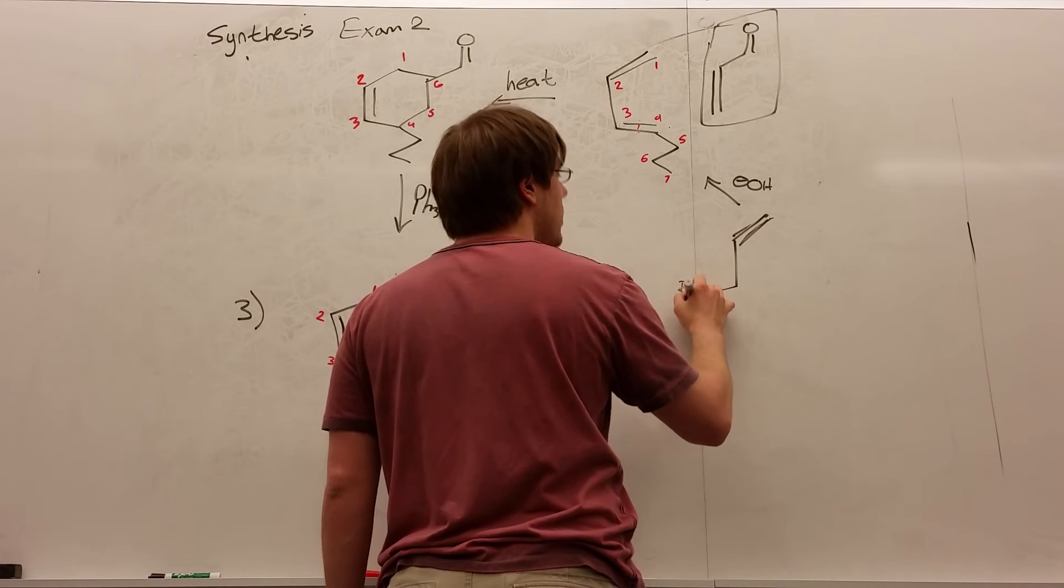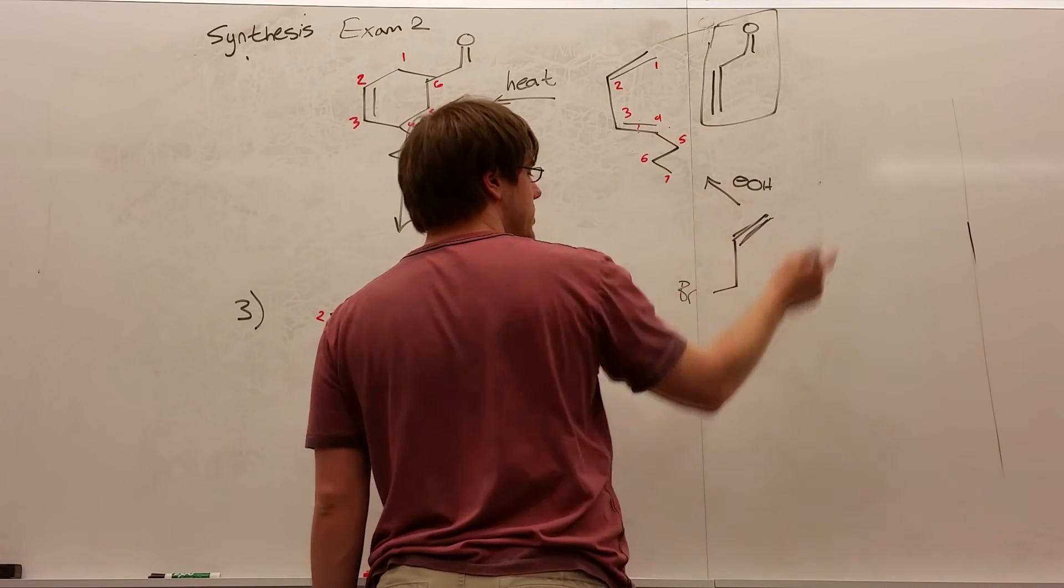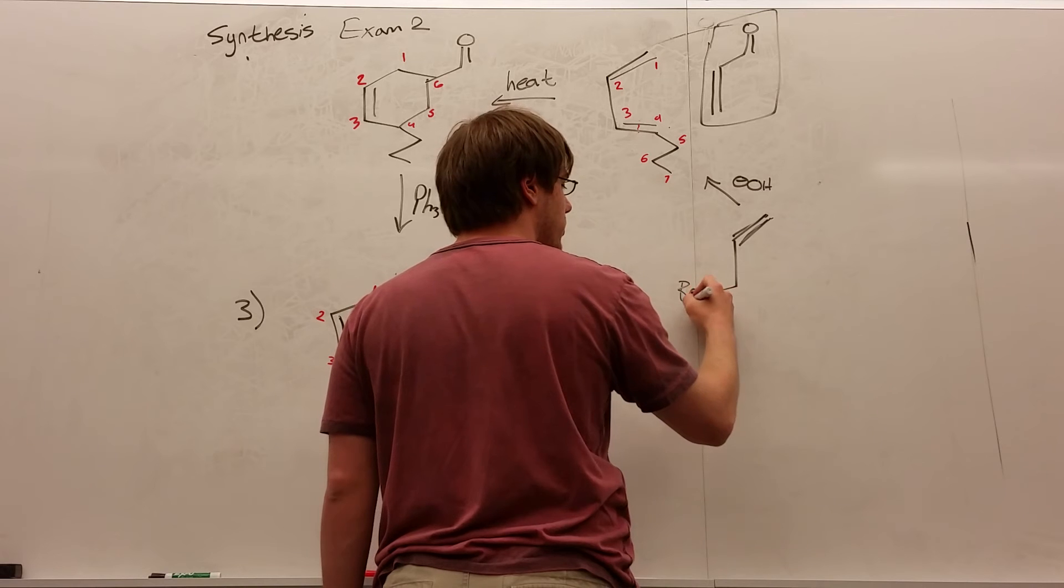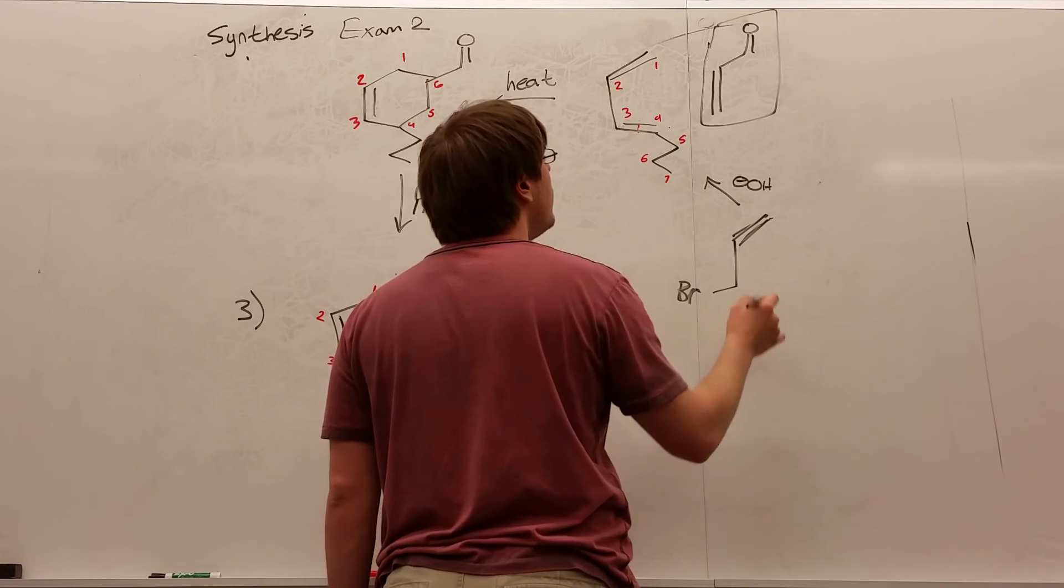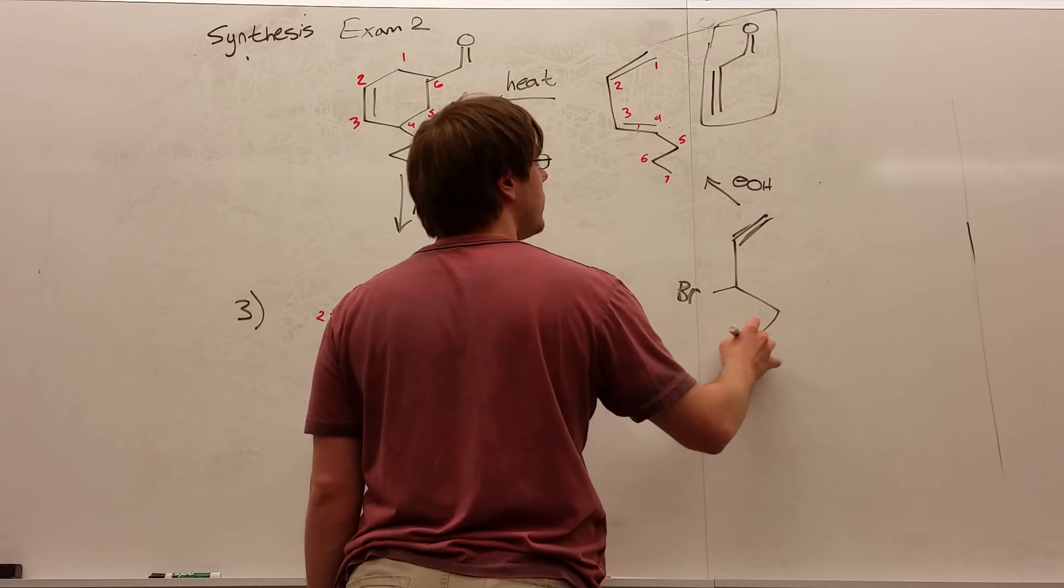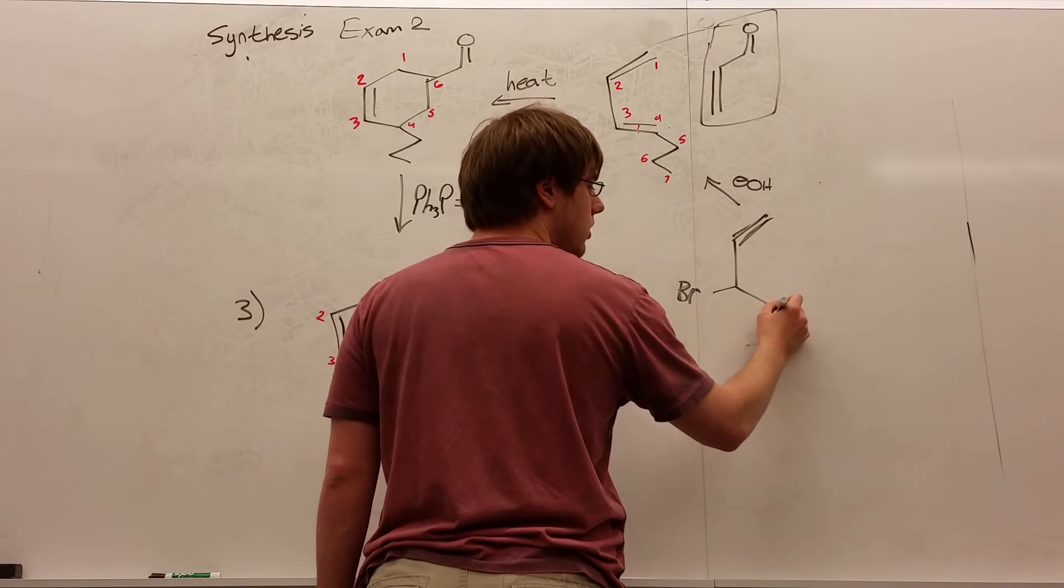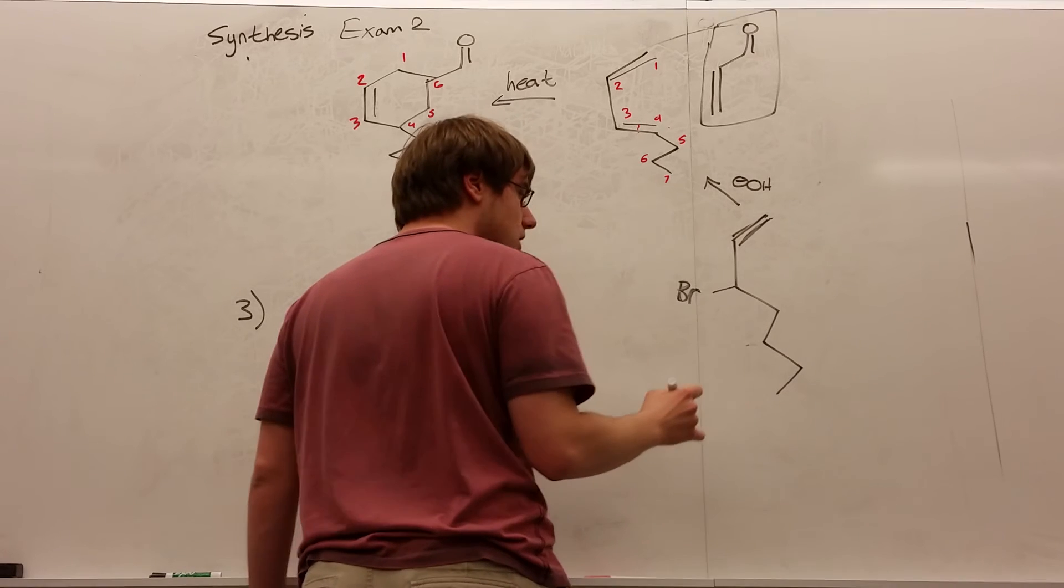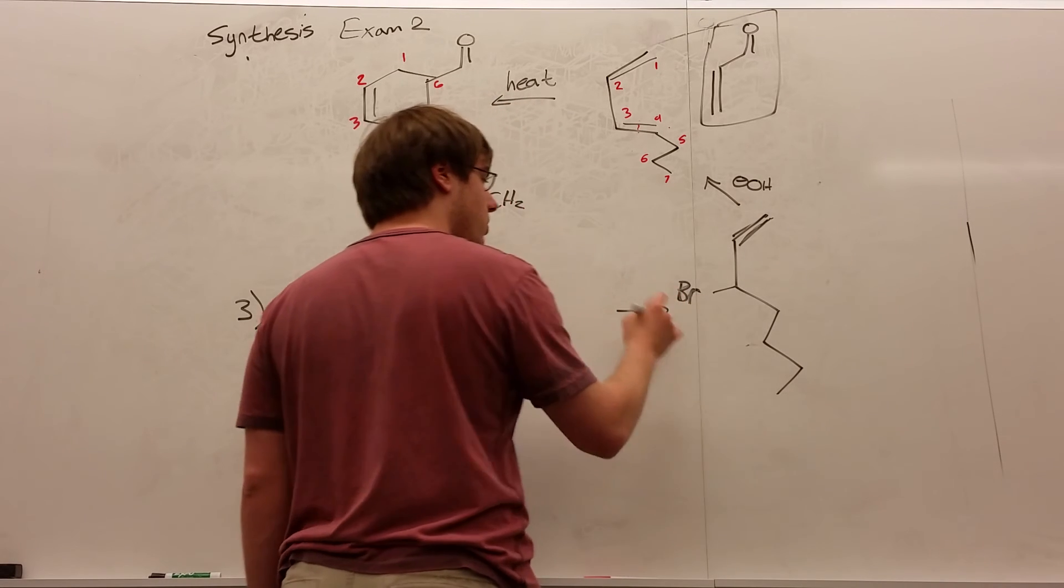So OH minus, we'll put a bromine. I'm going to choose to put that bromine on carbon 3. But if you put it on carbon 4, you'd still end up getting the same thing. It's fine either way, because you'll get 4 carbons or less on either side no matter where you put it when you cut.